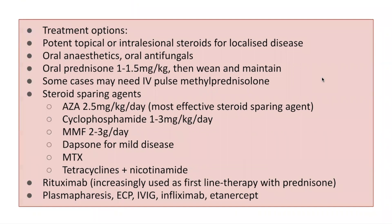Once there is some control with oral steroid, one should then consider switching to steroid-sparing agents. Several agents are available, including azathioprine, cyclophosphamide, mycophenolate mofetil, dapsone, methotrexate, tetracyclines, and nicotinamide. There is increasing evidence for the use of rituximab as the steroid-sparing agent of choice, and indeed some guidelines have recommended rituximab as the first choice. Other reported treatment options include plasmapheresis, ECP, IVIG, infliximab, and etanercept.